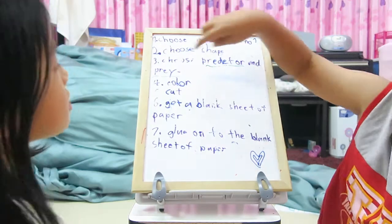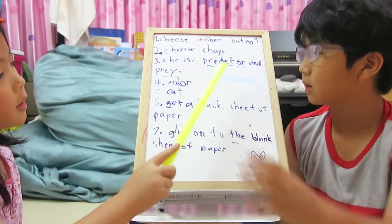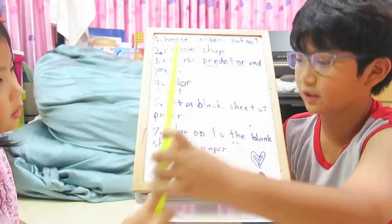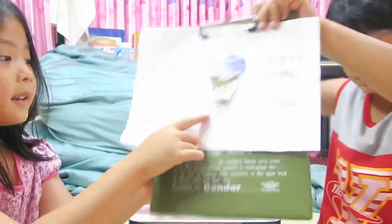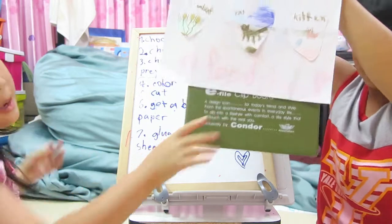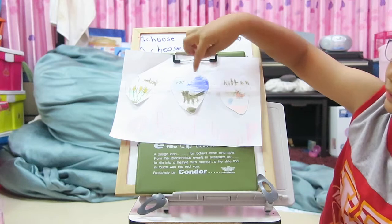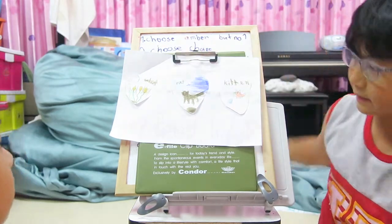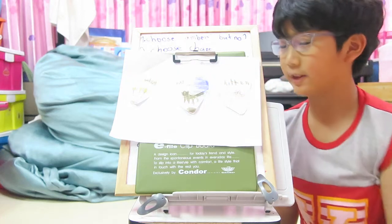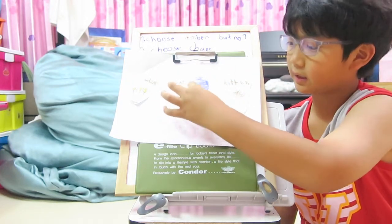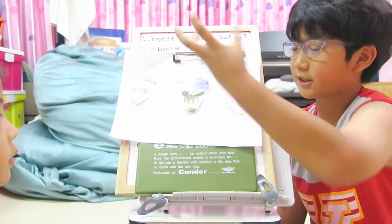Step three: choose predator and prey — big words there. So a rat eats wheat and a kitten eats a rat, so that means the kitten gets all of the energy. The wheat gets energy, then the rat eats the energy from the wheat — and also eats the wheat — and the rat gets the energy of the wheat. Then the kitten eats the rat.